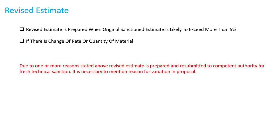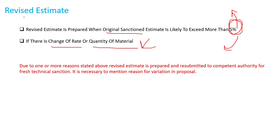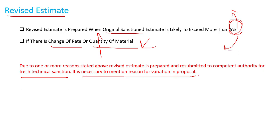The next estimate is the Revised Estimate. A revised estimate is prepared when the original sanctioned estimate is likely to exceed by more than 5 percent. The second condition is if there is a change of rate or quantity of material. Due to one or more of these reasons, the revised estimate is prepared and resubmitted to the competent authority for fresh technical sanction. It is necessary to mention the reason for variation in the proposal.